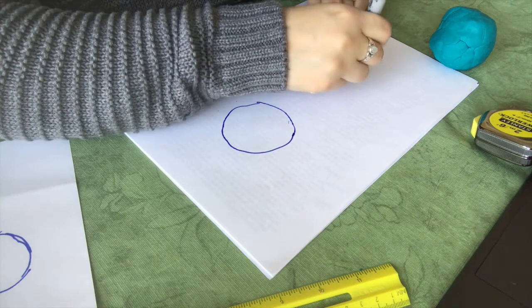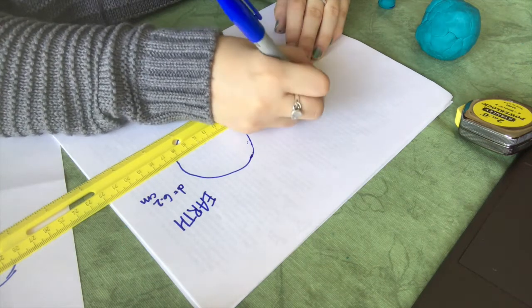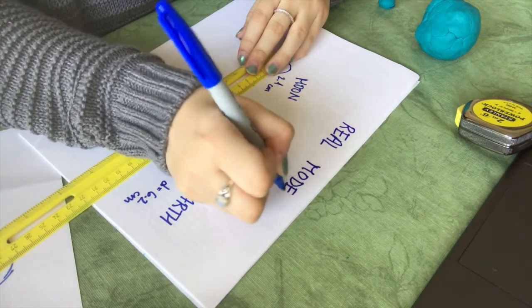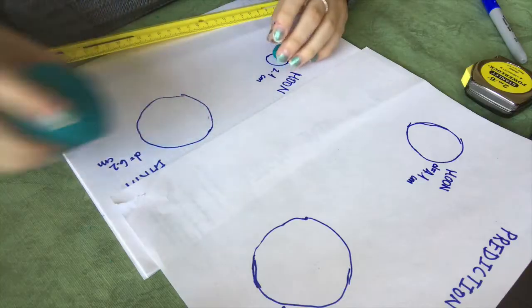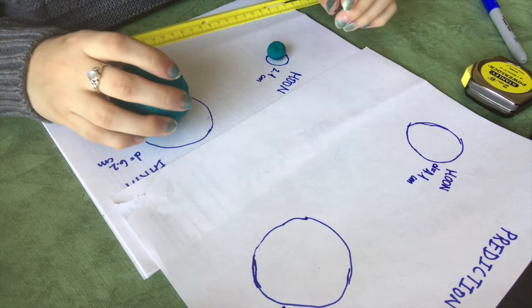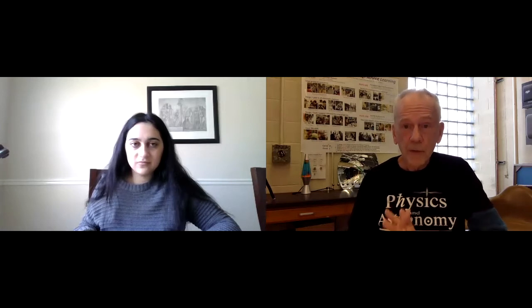You got it. Let's do the same thing we did before and measure the diameter across each. Mariana, tell me what you got this time. My Earth is about six centimeters, which is about the same as last time, but my Moon is about half the size as my last model. Now that you have your final scale model, in terms of diameter, how many times bigger is the Earth than the Moon? My Moon is about three times as small as the Earth.